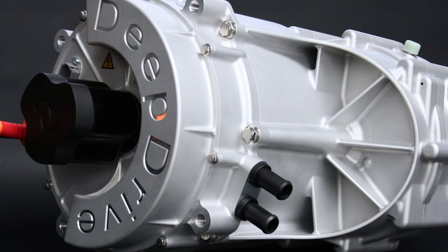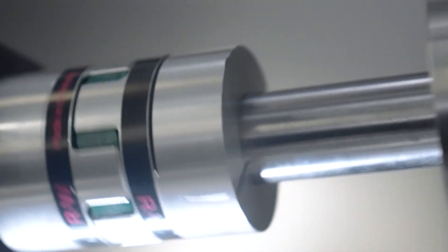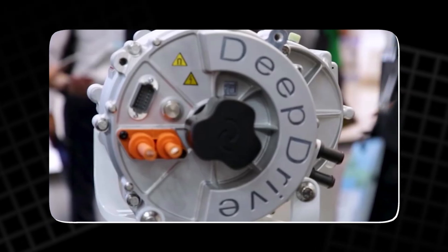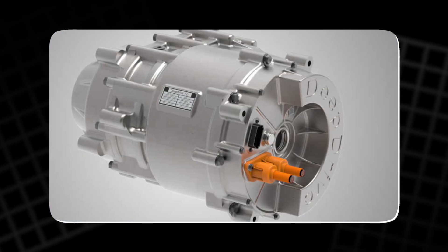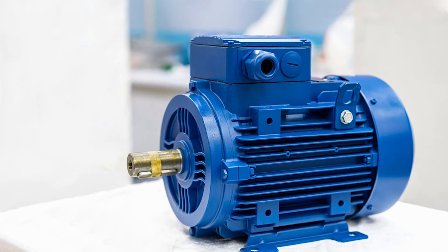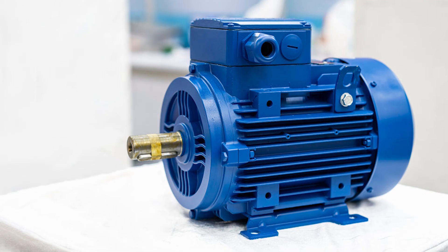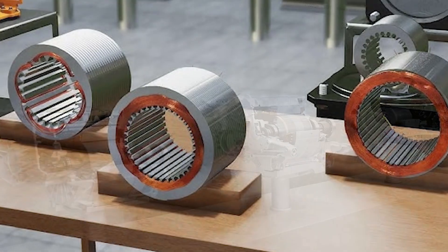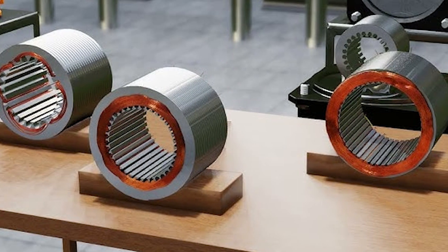DeepDrive's motor is a powerful example of how rethinking one part of a system can reshape the entire design. By challenging the role of the yoke and replacing it with a winding structure that is both mechanical and thermal, the engineers unlocked a new way to build efficient electric motors. The dual rotor layout became practical only because the windings could take on far more responsibility than usual.